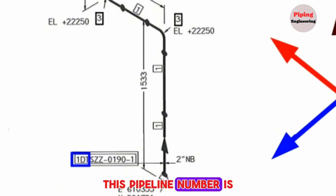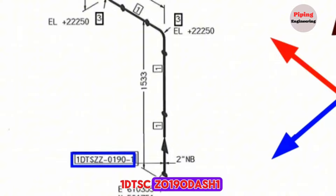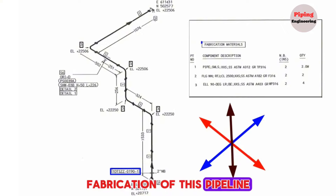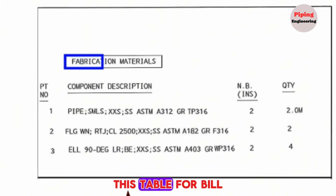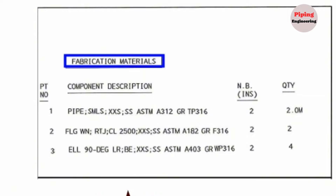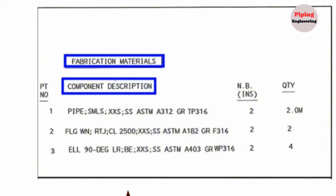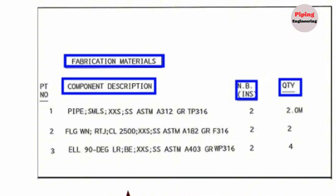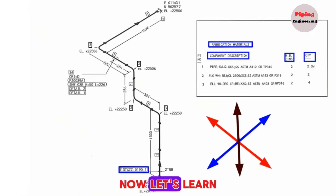This pipeline number is 1DTSC Z0190-1. Let's start by learning the bill of materials for the fabrication of this pipeline. This table shows the bill of fabrication materials. The materials description is shown in one column, the materials sizes in another column, and the materials quantities in the final column.